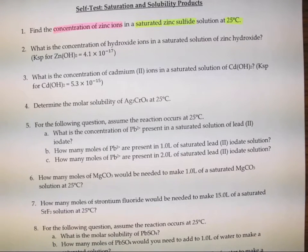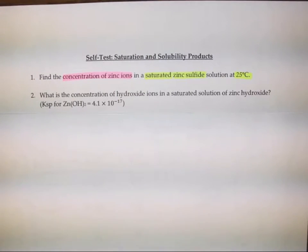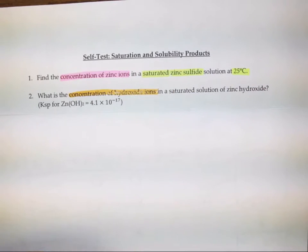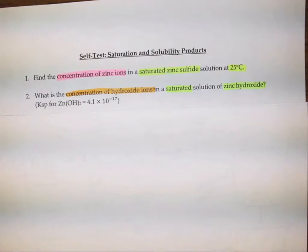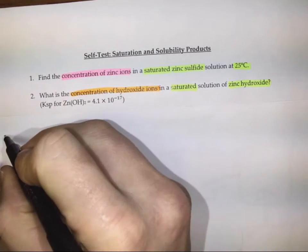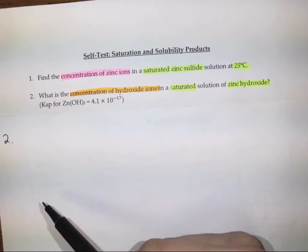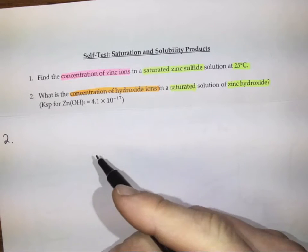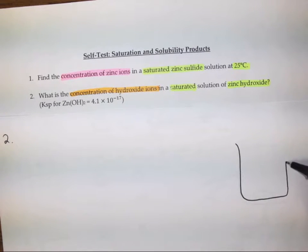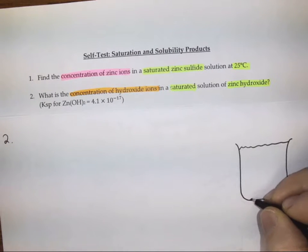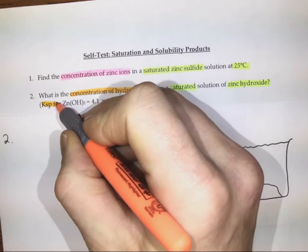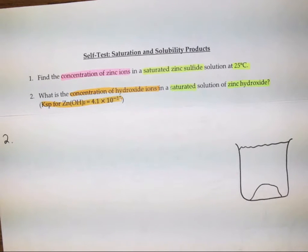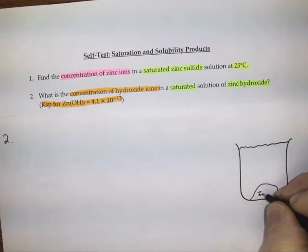Question 2 asks about the concentration of hydroxide ions in a saturated solution, and this time we have zinc hydroxide. Ksp for zinc hydroxide is given. So let's take a look. We'll start with a diagram — we start with some amount of zinc hydroxide, Zn(OH)₂. For every one zinc ion, there would be two hydroxide ions in the solution. We're not sure if all of the zinc hydroxide has been used up or not, but we know this solution is full of zincs and hydroxides — it's saturated, which means it's at equilibrium.